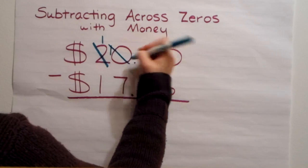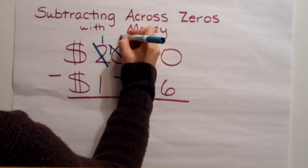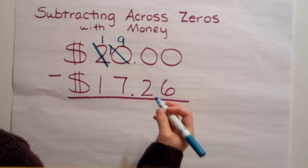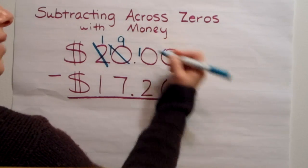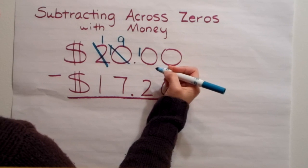I need to cross off my ten to ungroup. I'm going to leave nine there. I'm going to take that one group and I'm going to move it right here to the tenths place.